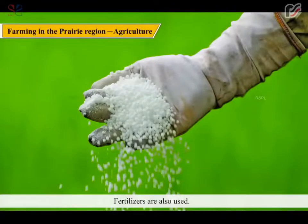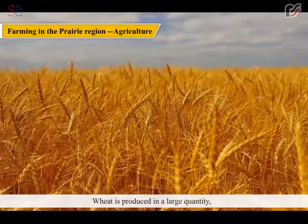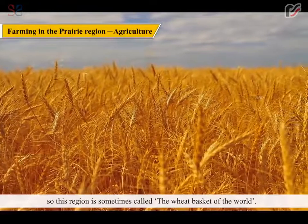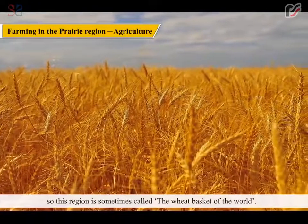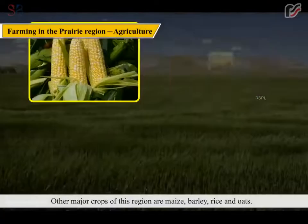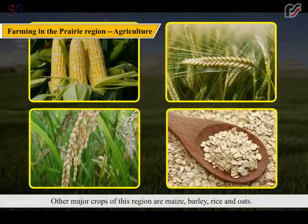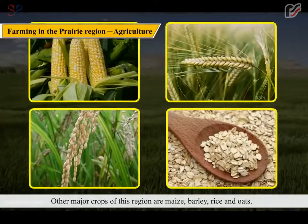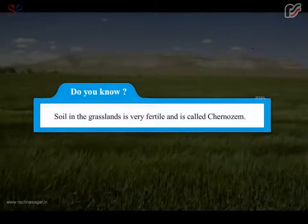Fertilizers are also used. Wheat is produced in large quantities, so this region is sometimes called the wheat basket of the world. Other major crops of this region are maize, barley, rice, and oats. The soil in the grasslands is very fertile and is called chernozem.